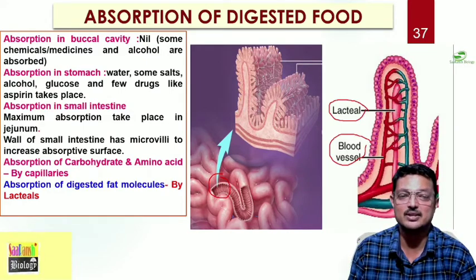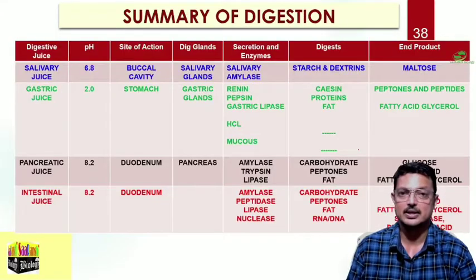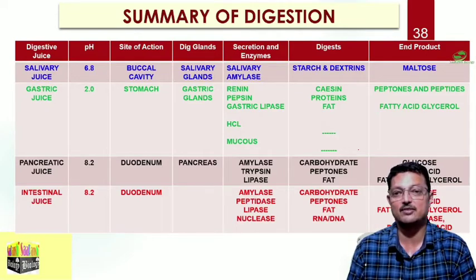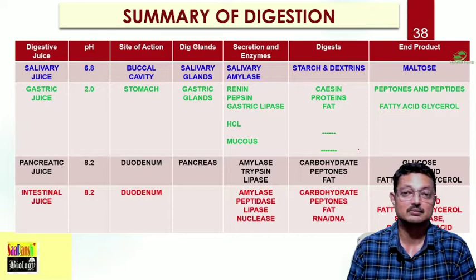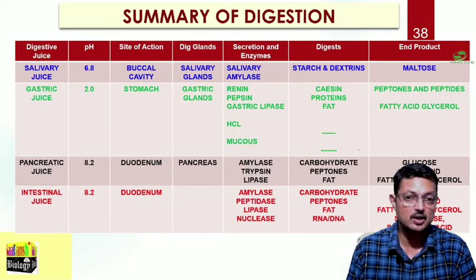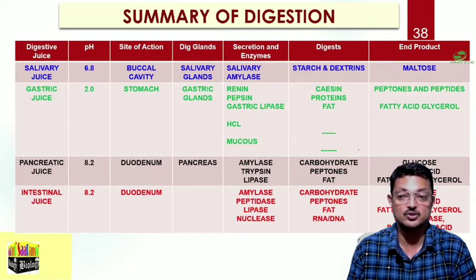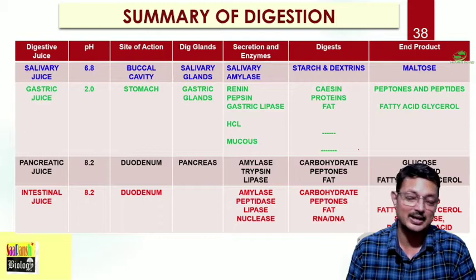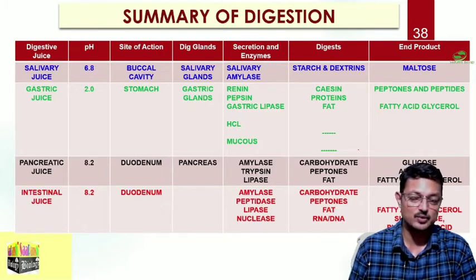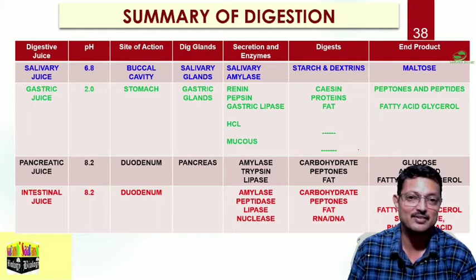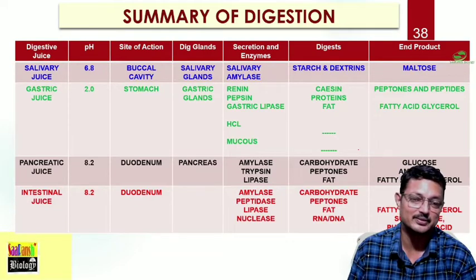In summary: salivary juice has pH 6.8, site of action is the buccal cavity, digestive gland is the salivary glands. The enzyme salivary amylase digests starch and dextrins; the end product is maltose. Similarly you have summaries for gastric juice, pancreatic juice, and intestinal juice - you can take a screenshot or write it down, as it is very important.